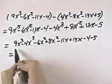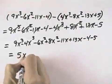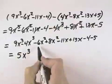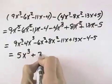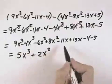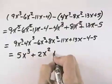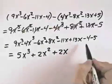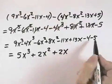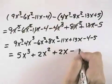Combining like terms, 9 minus 4 is 5x cubed, and negative 6 plus 8 is plus 2x squared. Negative 11 plus 13 is plus 2x. And finally, minus 4, or negative 4 minus 5, is minus 9.